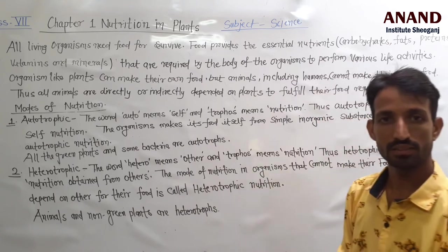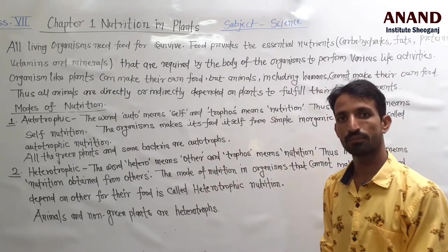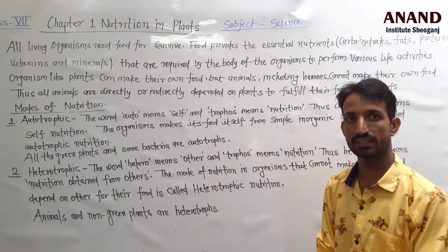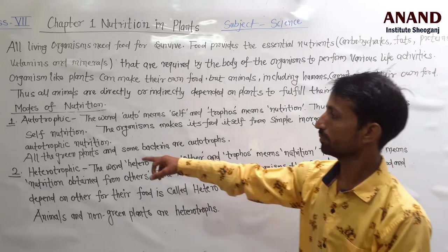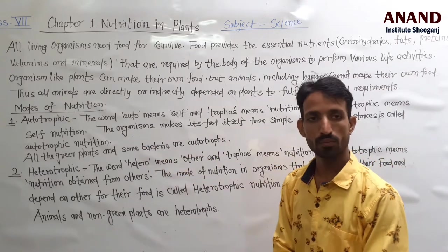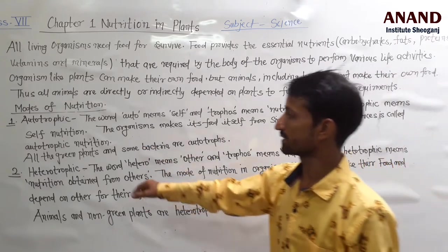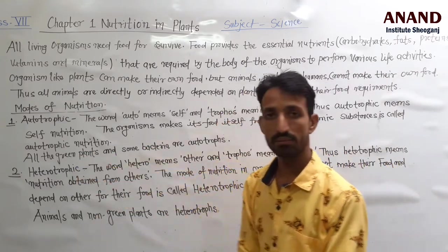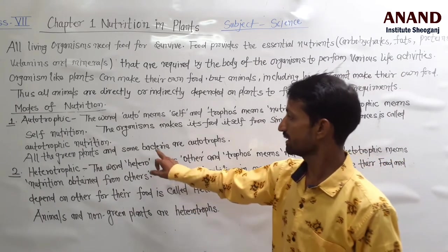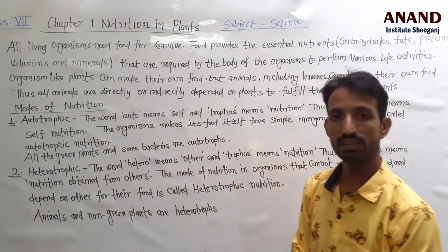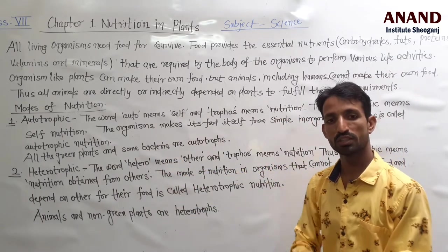Examples of autotrophic nutrition include all green plants and some bacteria, who make their own food.